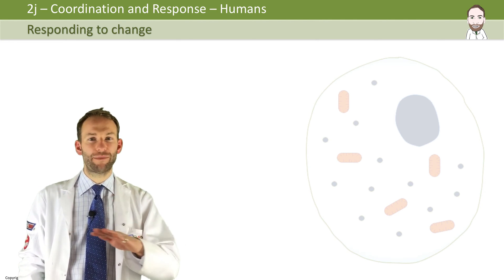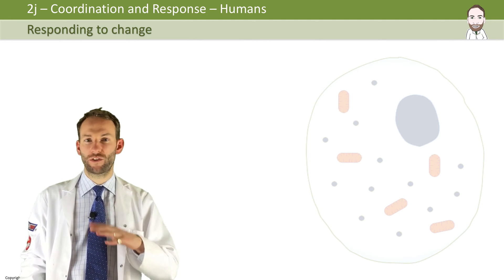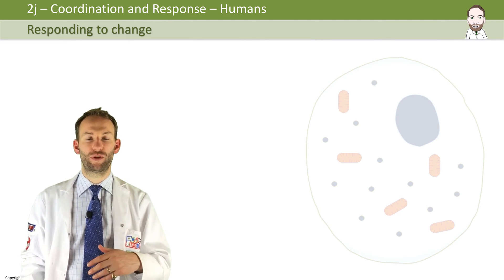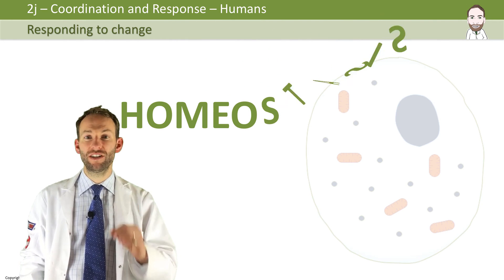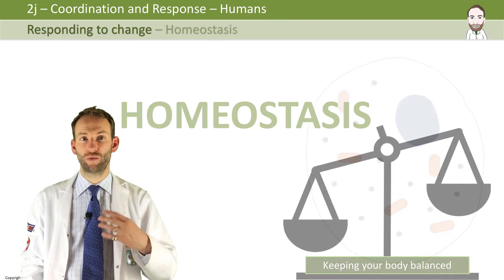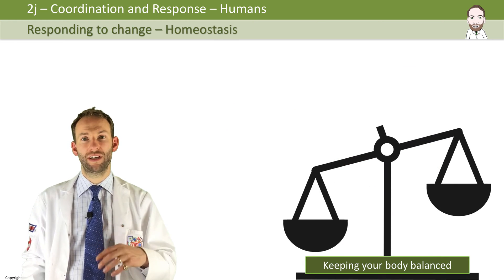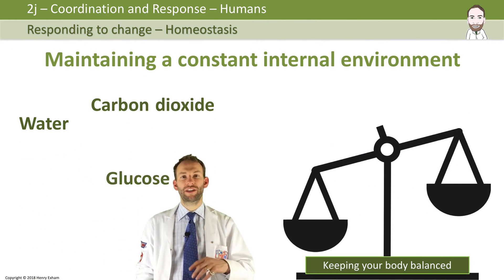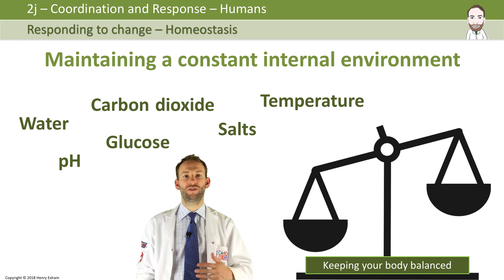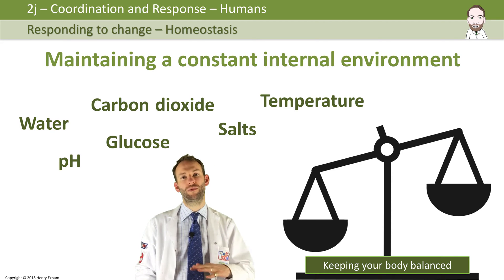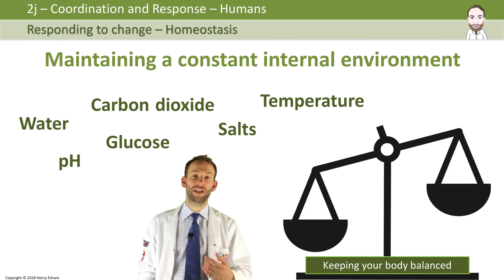Cells must be kept in the right conditions for all the metabolic reactions and enzymes to work properly. So keeping your internal environment constant is what we call homeostasis — it's a really important word in biology, maintaining a constant internal environment. I'm talking about things like water, carbon dioxide, glucose, pH, salt, and temperature. You've got to keep all these things as constant as possible in order to survive.